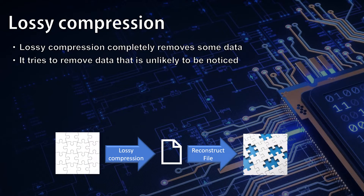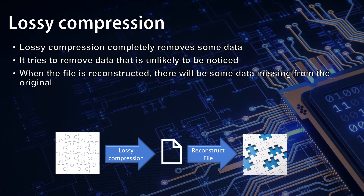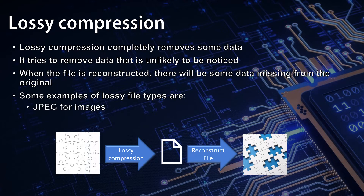However, when the file is reconstructed, there will always be some data missing from the original. Some examples of lossy file types are JPEGs for images and MP3s for sound. The trade-off for the loss of file quality is that lossy compression tends to compress images and other files by a much greater amount.